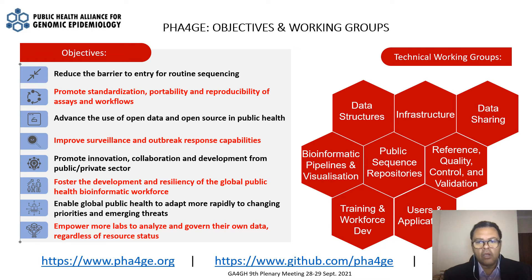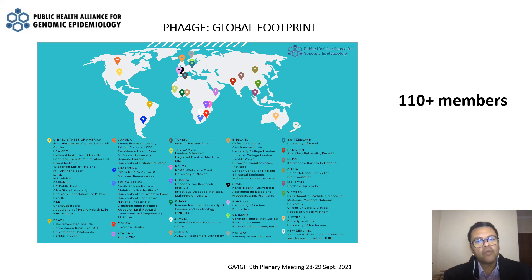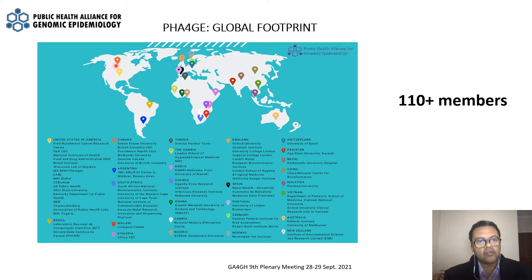We have about 110 members at the moment, scattered across 68 countries. The challenge with showing a slide like this is that inevitably the slide is already out of date. One representation shown for a group in the U.S. and one in Canada is not the case — I've just indicated one position which actually represents more than 15 institutions.